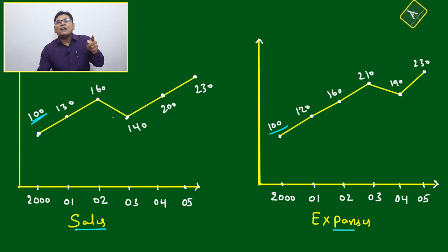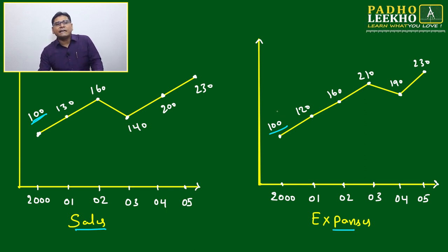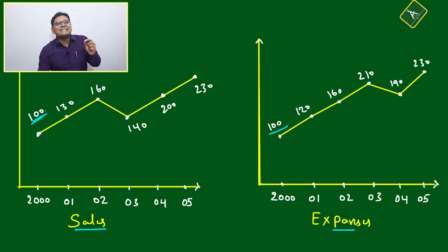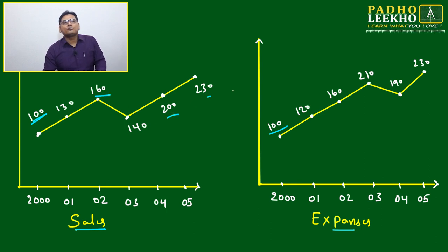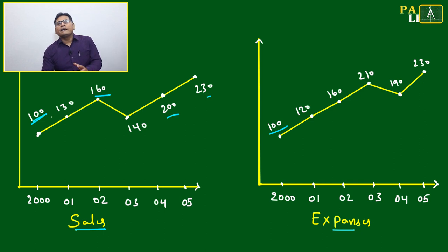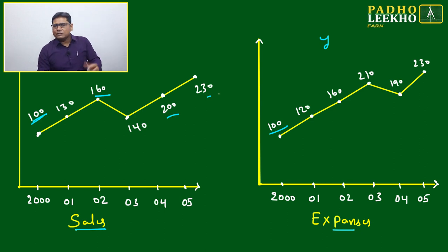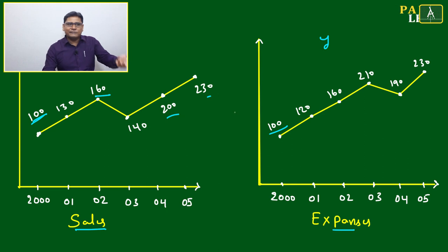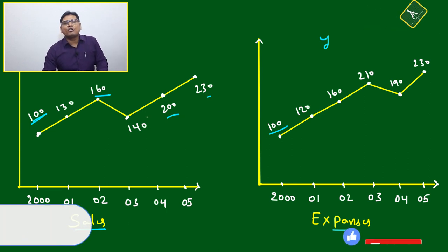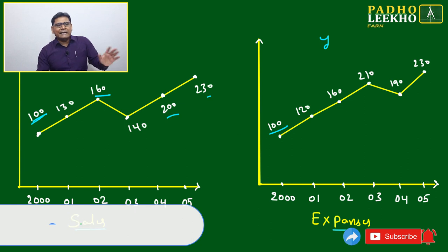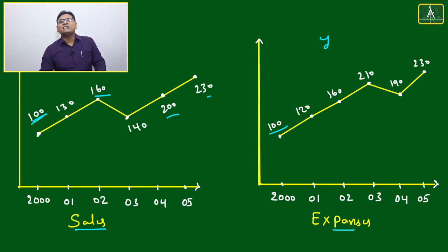You cannot say sales equals 100 and expenses equals 100 in the same unit — but we have indexed both at 100. This means there is some common factor multiplied into each data series. For expenses, the values are 100, 120, 160, 210, and so on — some common factor is multiplied. Similarly, for sales: 100, 130, 160, 200, 230, and so on. We'll take the common factor for sales as x and for expenses as y. So x is the common factor for sales and y for expenses.